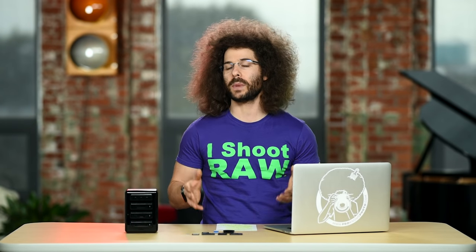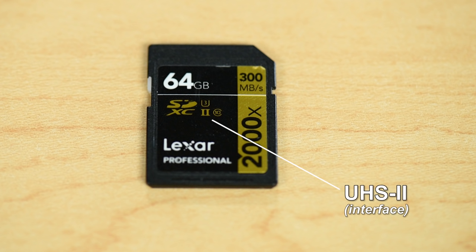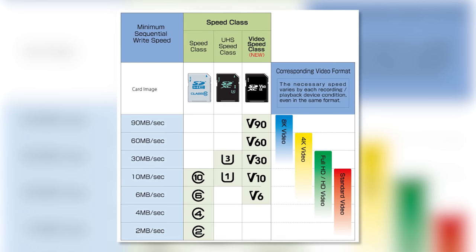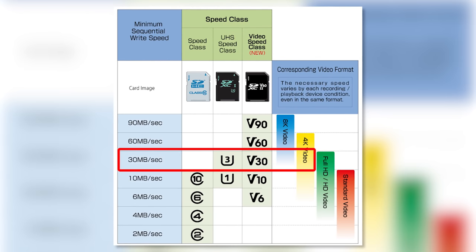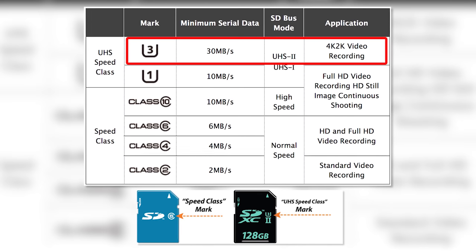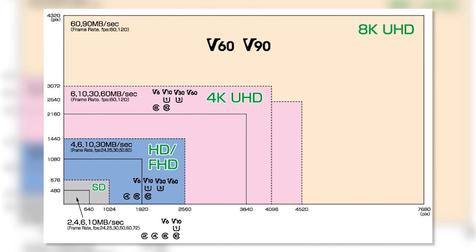Read-write speed refers to the speed at which the camera writes data to the card, as well as the speed the card transfers through a card reader to your computer. For SD cards, you have options like UHS-1 and UHS-2, which are newer and faster, and then class ratings like Class 3, 4, 6, and 10 — the higher the class, the better the transfer rate. When you have a 4K capable camera, you'll need a faster card, because if the card's write speed is too slow, your camera may not be able to save 4K footage. The faster the card, the better — both for writing data and for saving time during transfer.